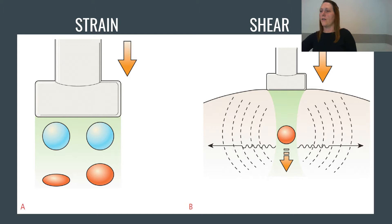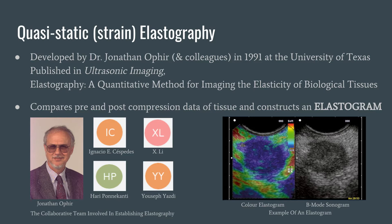I'll turn it over to Victor now to explain the ins and outs of quasi-static elastography. Quasi-static, also known as static or strain elastography, is an earlier elastography technique than shear wave and was just known as elastography back when it was first developed in the early 1990s. The basic idea behind it is that it compares data before and after compression of tissue and produces an elastogram.